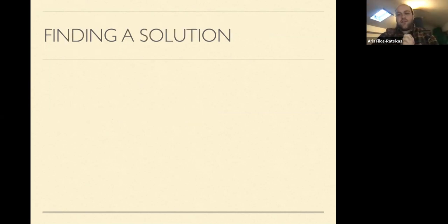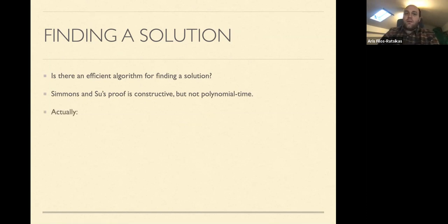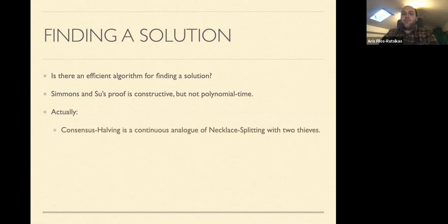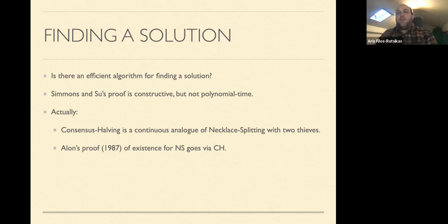We know a solution to approximate consensus halving exists — it is a total problem — but can we find it efficiently? The proof by Simons and Su for the approximate version is constructive and does give an algorithm, but it is not a polynomial time algorithm. Interestingly, consensus halving is a continuous analog of necklace splitting with two thieves: existence of necklace splitting is proven using the Borsuk-Ulam via the continuous version, so you prove consensus halving has a solution via Borsuk-Ulam, and from there prove necklace splitting. This is because consensus halving is more general than necklace splitting.